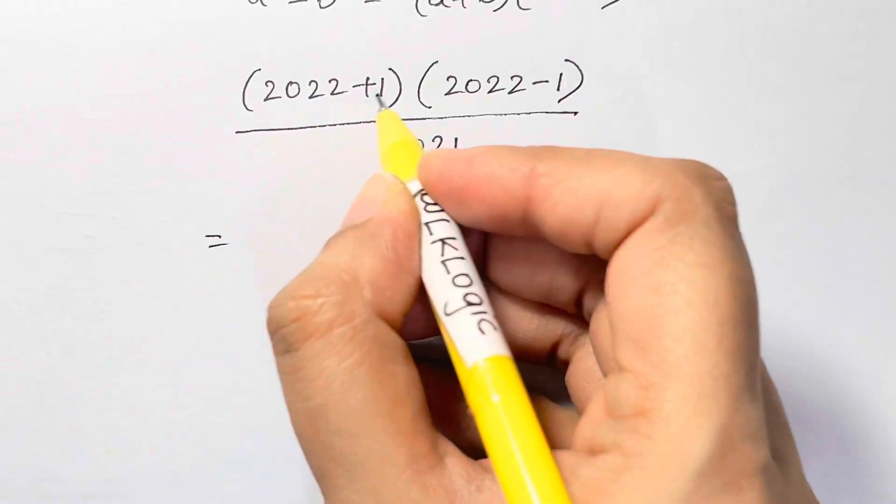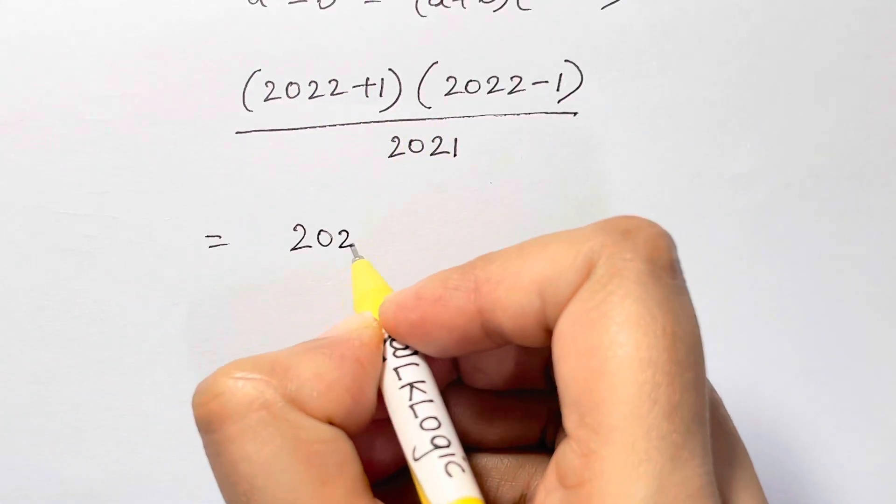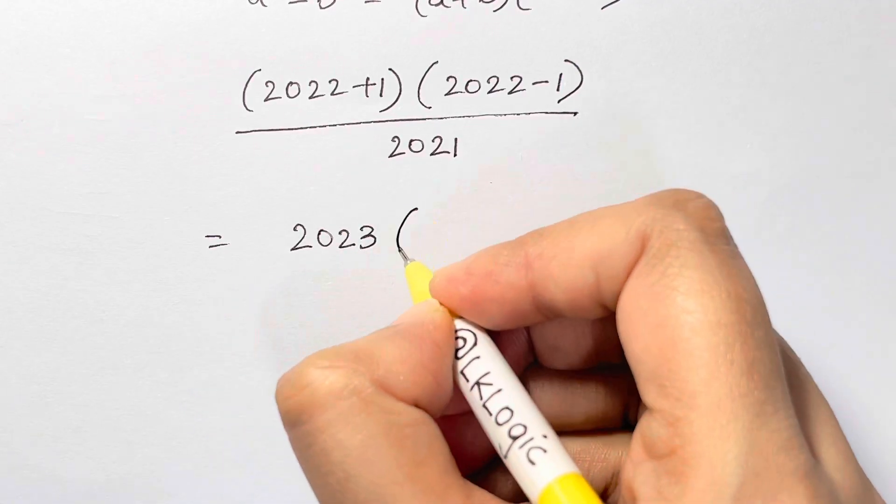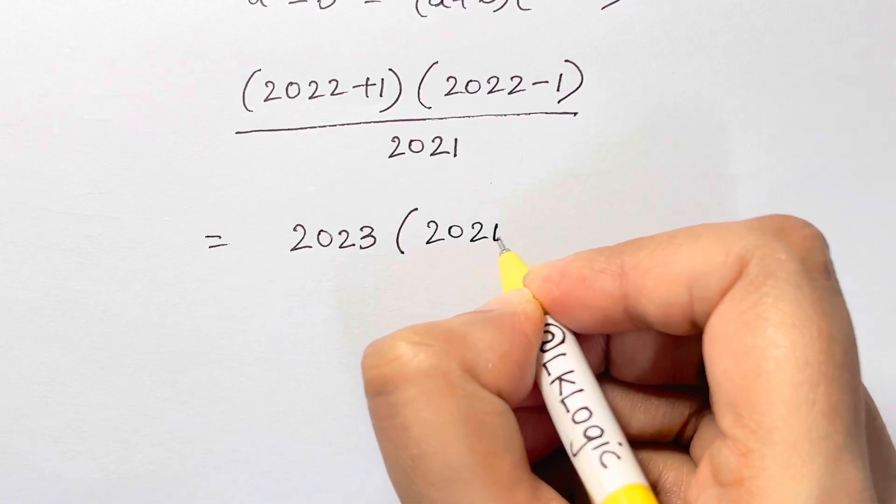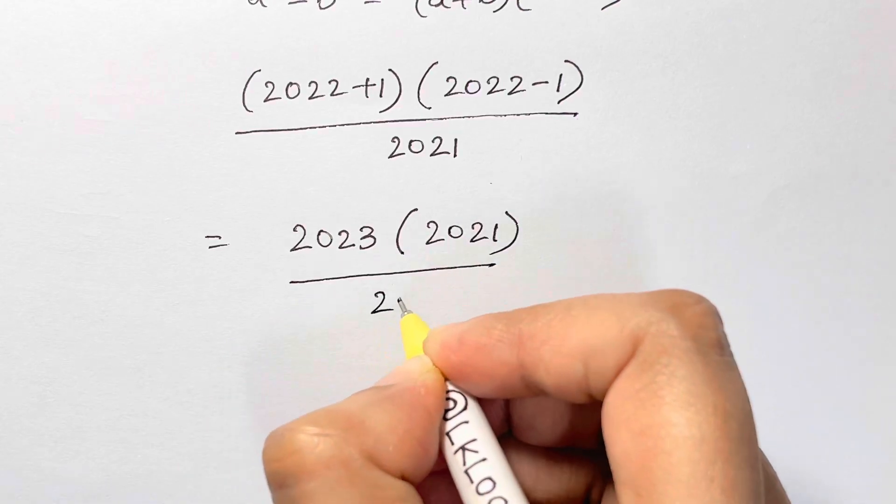2022 plus 1 is 2023 times, we have 2021 over 2021.